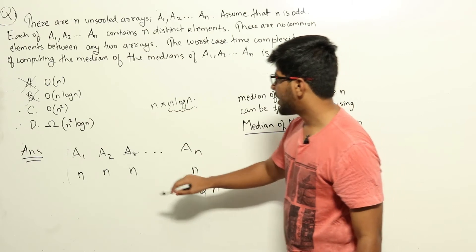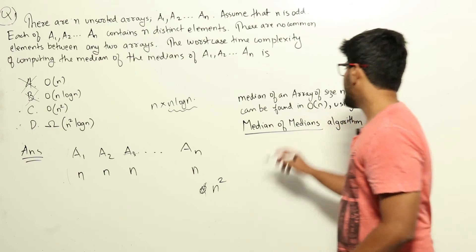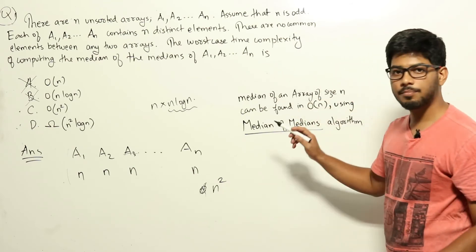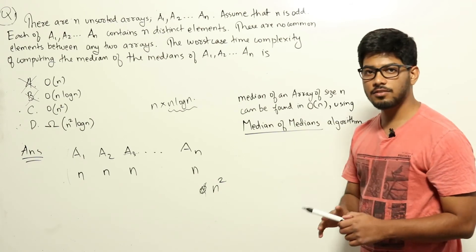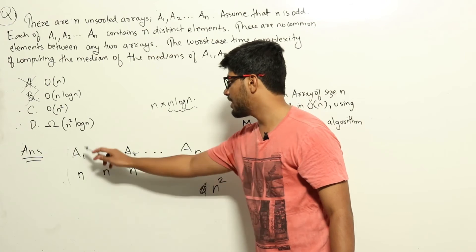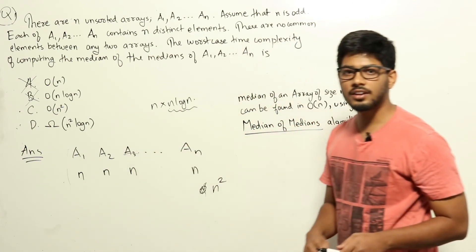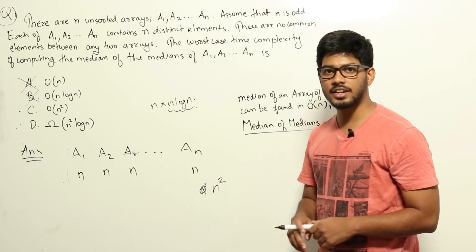But, finding the median of an array, we don't need to sort that array. The median of an array of size n can be found in O(n) time using the algorithm median of medians. So if you are applying the median of medians algorithm, we can find out the median of array a1 or each of the arrays in O(n) time only. We don't need to sort the array and spend O(n log n) time in order to get the median.